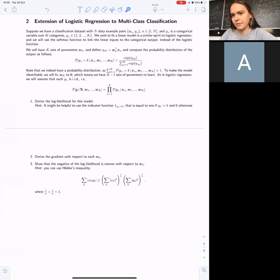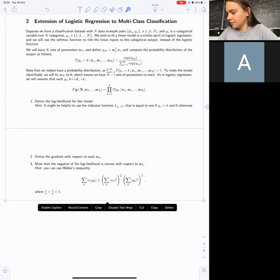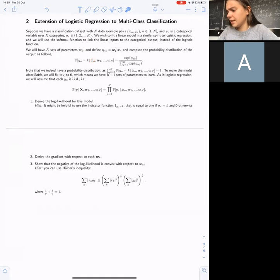Instead of just one set of parameters as we had for binary classification, we have k sets of parameters wk. Each wk corresponds to its own class. For every data point xn, we take the scalar products with each of these parameters and look for which class this one is bigger. This will be our assignment for the class.